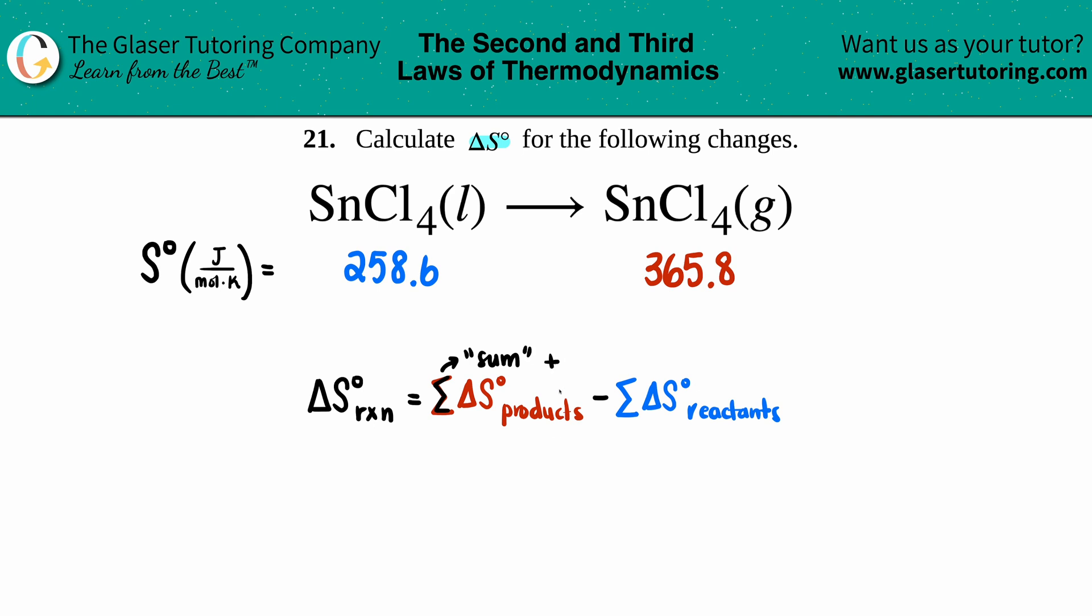In this case we have a balanced equation. There was only one SnCl₄ and there was only one SnCl₄ on the other side—SnCl₄ liquid and SnCl₄ gas. We have to make sure that we have the total ΔS values for as many of the compound we have.